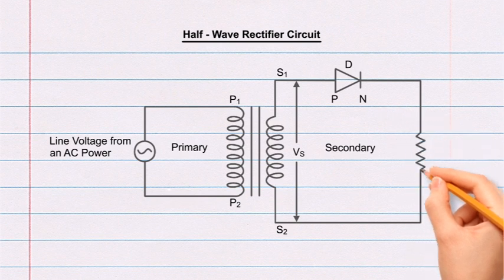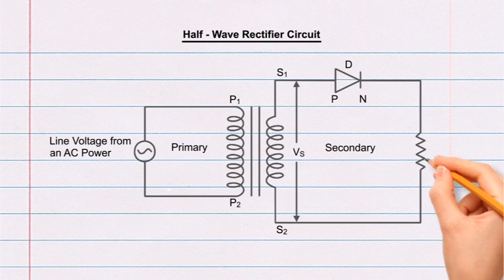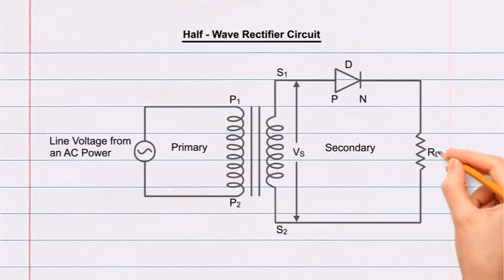On the right vertical line of the rectangle, draw a resistor with a zig-zag line. Label the resistor RL. RL represents the load resistor.